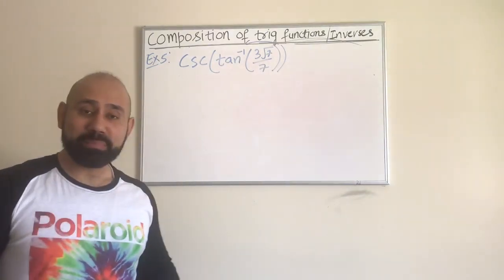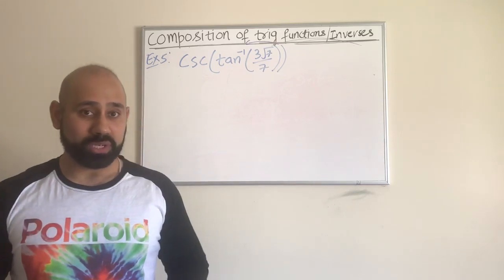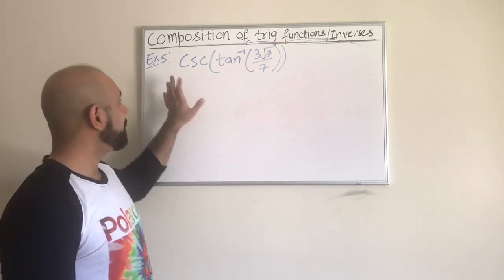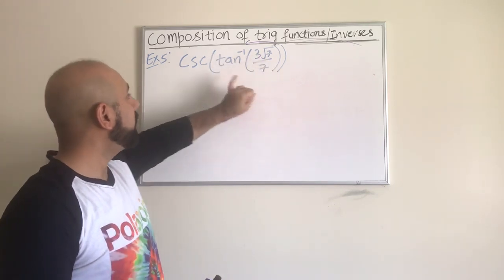Hi guys, welcome back. I'm back here with another example on composition of trig functions with their inverses. This time we have a cosecant outside and then we have a tan inverse with this ratio here inside as well.